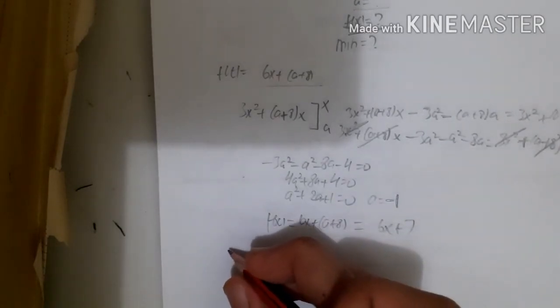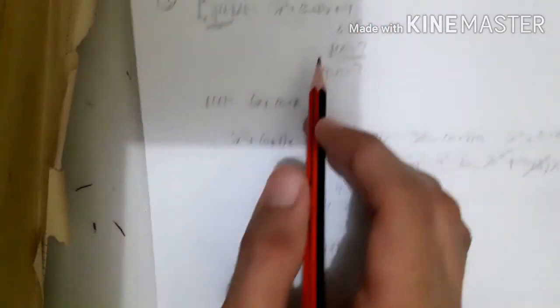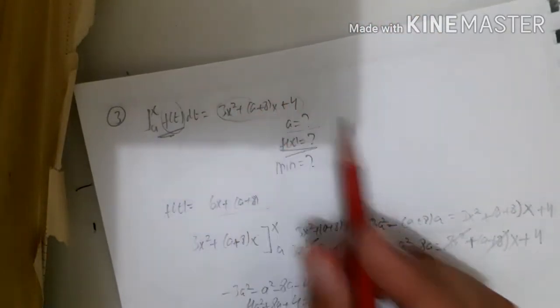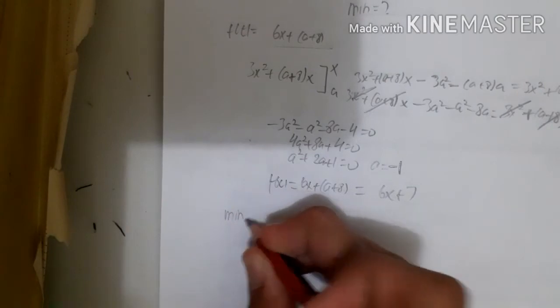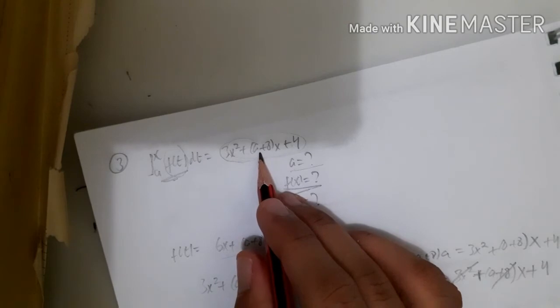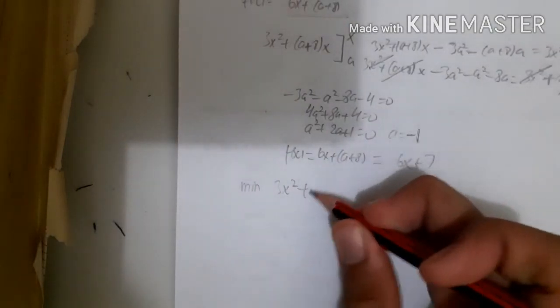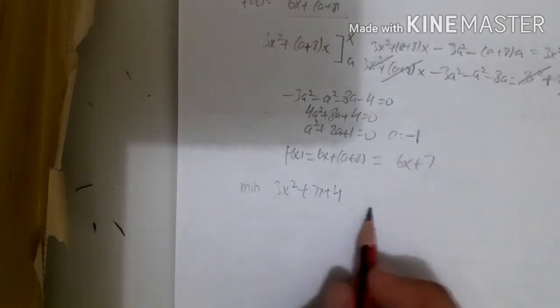Now for the minimum value of the integral, we have to find the minimum of this. So the minimum of 3x² + 7x + 4, since we already know a. So what is the minimum of this?